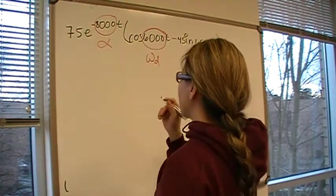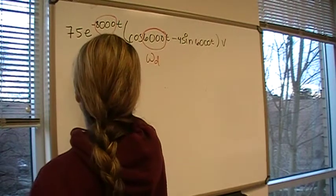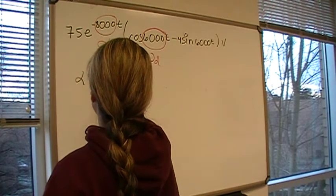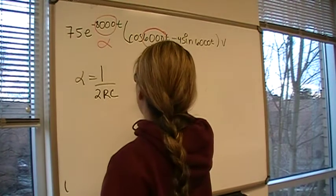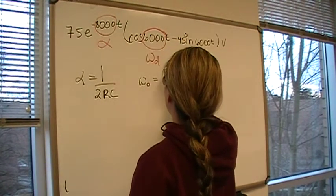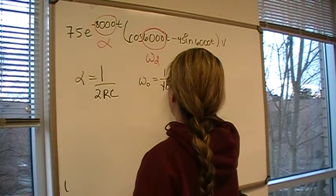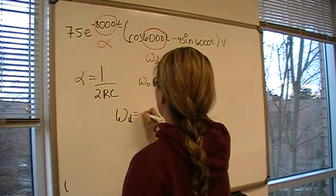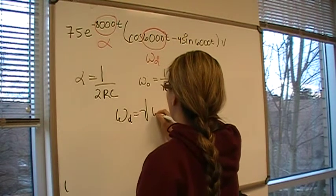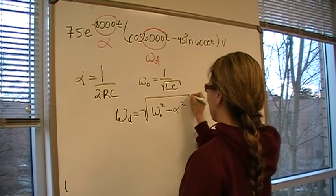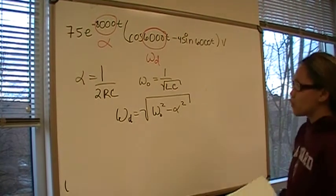We have two equations that we can use. We know that alpha equals 1 over 2RC, and we know that omega 0 is equal to 1 over the square root of LC, and omega D equals the square root of omega 0 squared minus alpha squared.